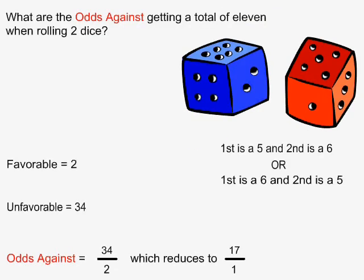In this example, what are the odds against getting a total of 11 when rolling two dice? There are 6 things that can happen when we roll a single die. When we roll two dice, we have to multiply 6 by 6, and there are 36 combinations that can happen.